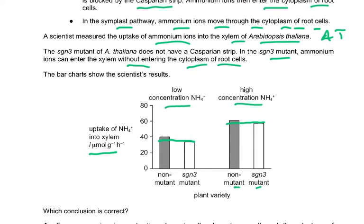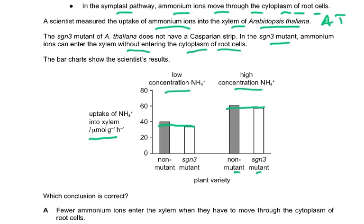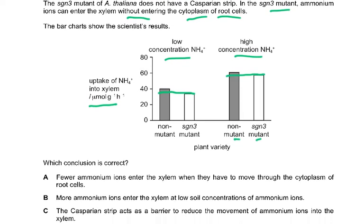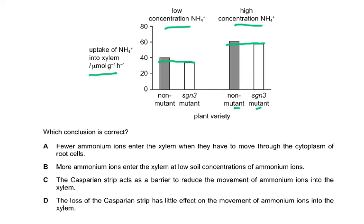You have to look at it very carefully and then it asks which conclusion is correct. You have to read all four and think which one is correct. Option: fewer ammonium ions enter the xylem when they have to move through the cytoplasm of the root cells — we don't see that anywhere. More ammonium ions enter the xylem at low soil concentration — that's wrong. This is more ammonium, this is less ammonium.